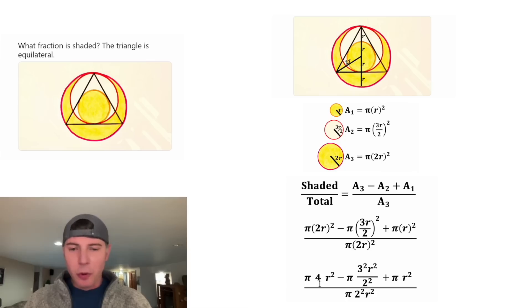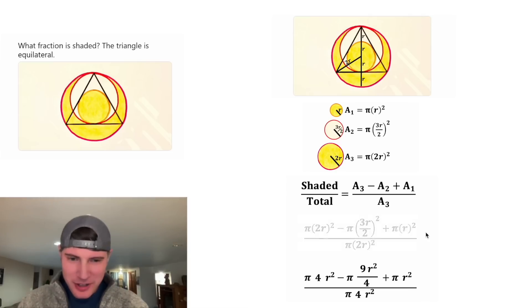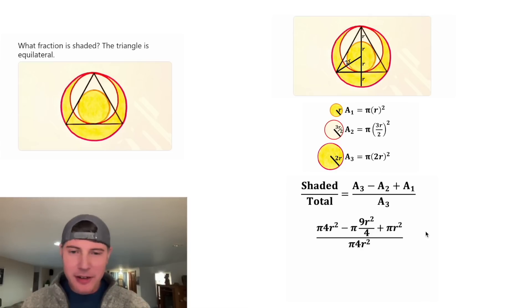2 squared is equal to 4. 3 squared is equal to 9. 2 squared is equal to 4. And 2 squared is equal to 4. I ran out of room. Let's get rid of this one and let's move this up here. All the terms on top and bottom contain a π r². So let's factor out a π r² from top and bottom.